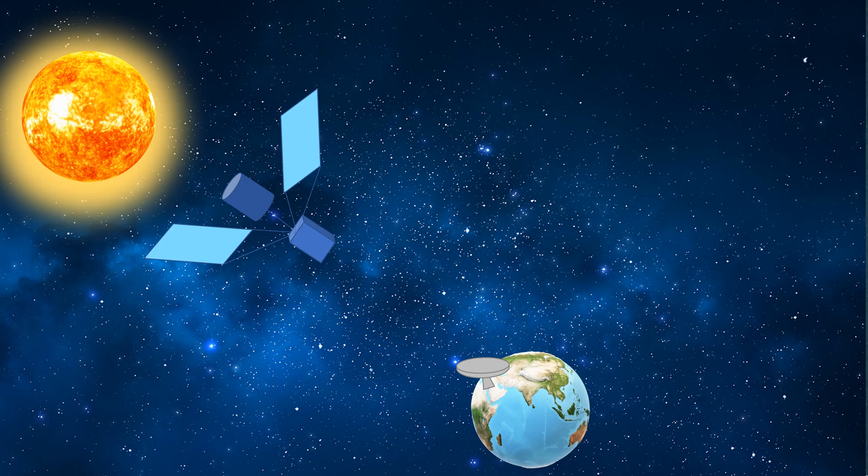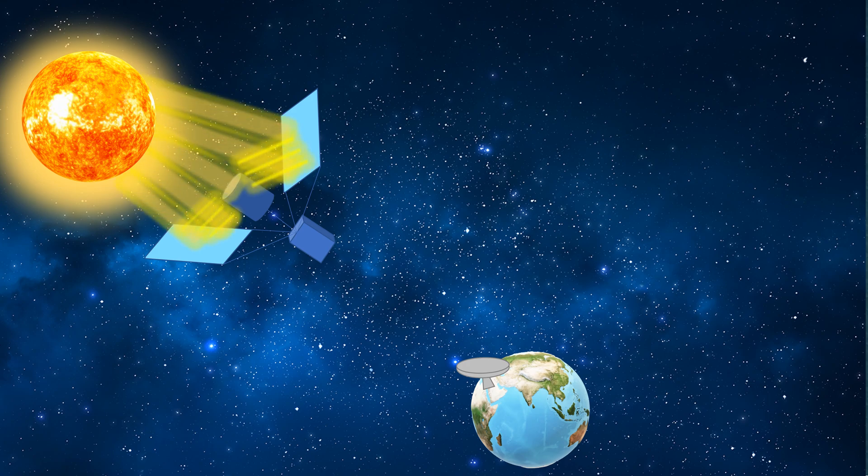Space-based solar power involves collecting the sun's energy in space and then wirelessly transmitting it to earth. Giant mirrors are installed in space to collect solar energy from the sun. This solar energy is converted into electrical energy using solar panels.